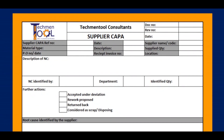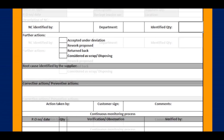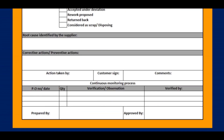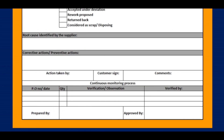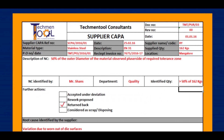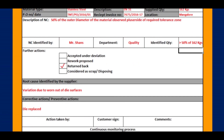This is the format for supplier CAPA, which is a normal corrective action given by the supplier for their rejected parts. This includes information about supplier details, material details, PO number, receipt invoice number, NC details, who identified the NCs, further action details, root cause details, corrective action and preventive action details, and continuous monitoring process and verification details.